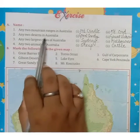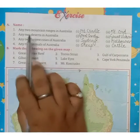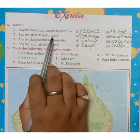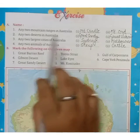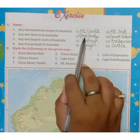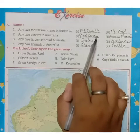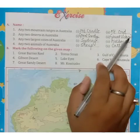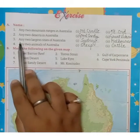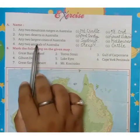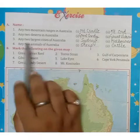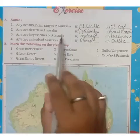Next is any two deserts in Australia. You will write Great Sandy Desert and Great Victoria Desert. Next is any two larger cities of Australia.